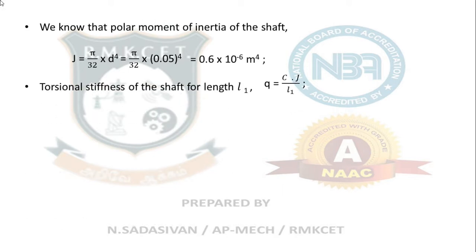The initial length, the upper portion of the length is called L₁, CJ/L₁. C is 84 × 10⁹, L₁ is 0.9 if you look in the figure, the upper length above the flywheel up to the upper support of the shaft. J equals 0.6 × 10⁻⁶.